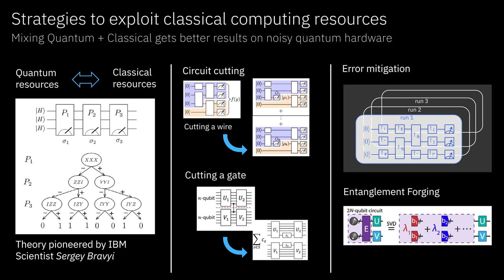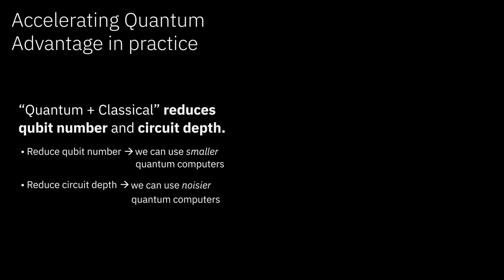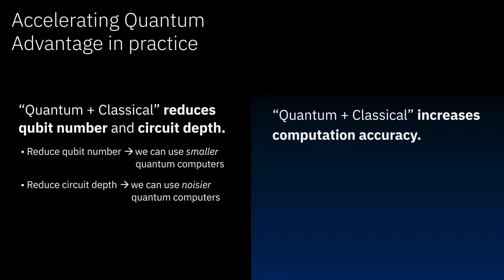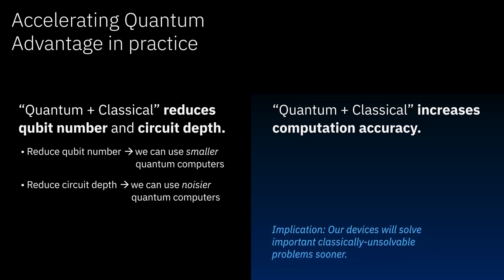Error mitigation techniques are another class of methods that extend the power of quantum circuits with classical post-processing. This year, we extended the reach of error mitigation to simulation of a 2D Ising lattice on our Falcon processors. In general, we believe that combining quantum and classical computation can extend the reach of near-term hardware by allowing execution on smaller or noisier processors. Furthermore, quantum plus classical increases computational accuracy, letting us get meaningful results sooner. In combination, our devices will be able to outperform classical computers sooner than they could otherwise.